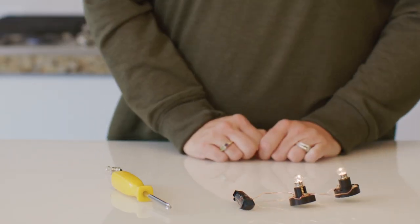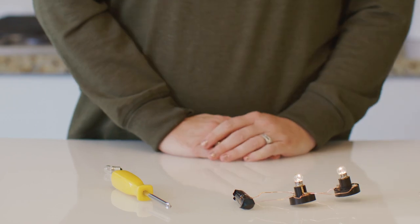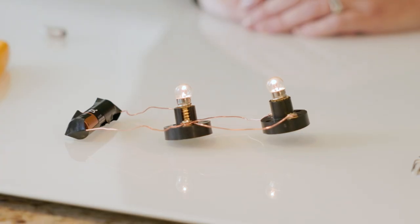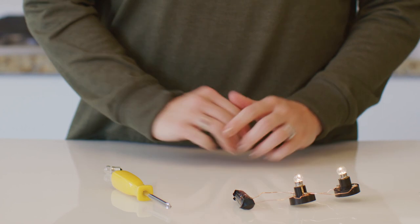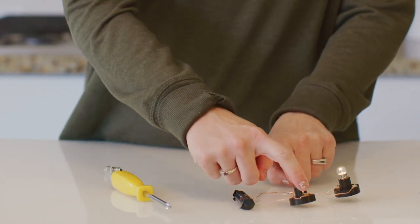We have light again! But we no longer have a series circuit. Do you know what this type of circuit is called? It's a parallel circuit. The energy splits where the wires touch the screws, and each bulb has its own circuit.